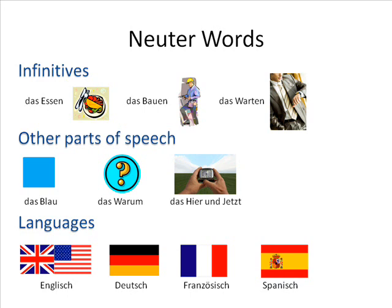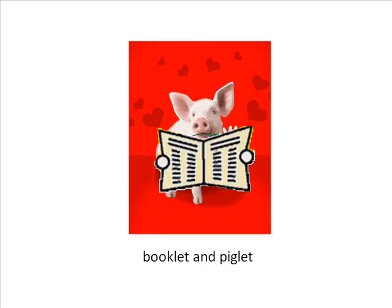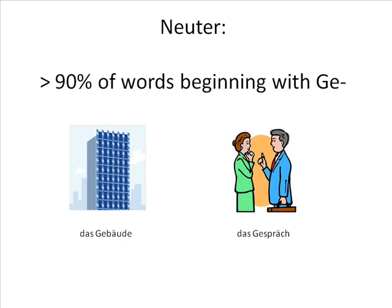There are also a number of word endings which always mean a word is neuter, which are worth learning. The most important of these is '-chen' (C-H-E-N), which is why the word for girl, 'Mädchen', is neuter instead of feminine like you'd expect. Another important neuter ending is '-lein', which is why 'Fräulein' — another word sometimes used to mean girl, and which also used to be commonly used to mean 'miss', as in Miss Smith — is also neuter. Both '-chen' and '-lein' are diminutive suffixes, which means they refer to a smaller version of the word they're attached to, like '-let' in booklet and piglet in English. Also, over 90% of words beginning with 'ge-', such as 'Gebäude' (building) and 'Gespräch' (talk), are neuter.